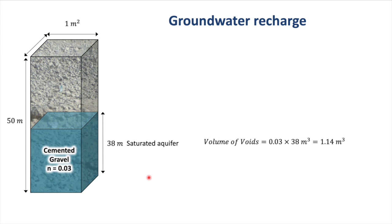We can calculate the total volume of voids by multiplying the porosity, 0.03, by the thickness, 38 meters, and we end up with 1.14 cubic meters. Now, that is the amount of groundwater in storage before the recharge event. So we had 1.14 cubic meters of water in storage here for each square meter of aquifer surface.